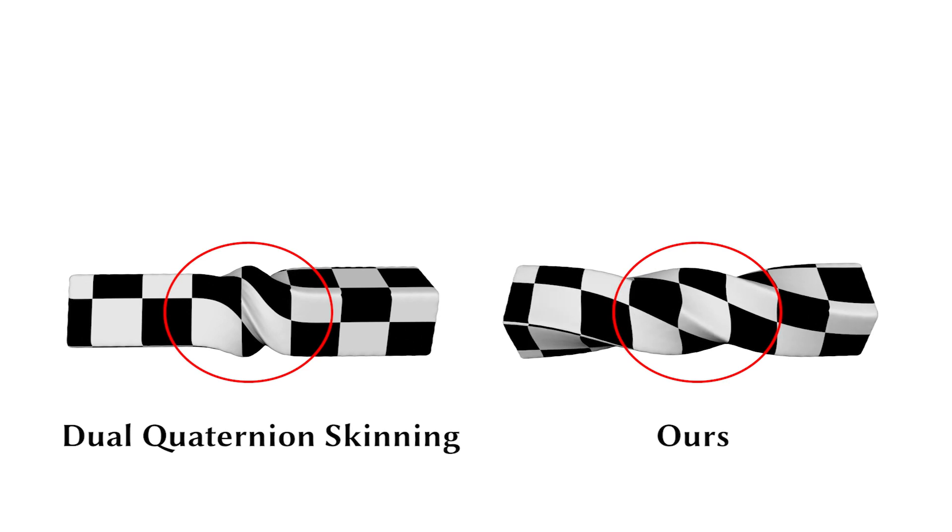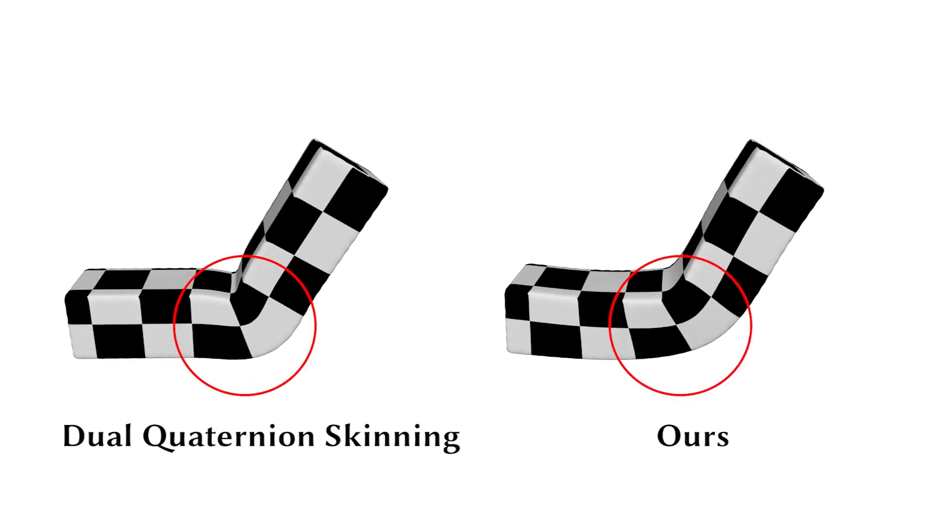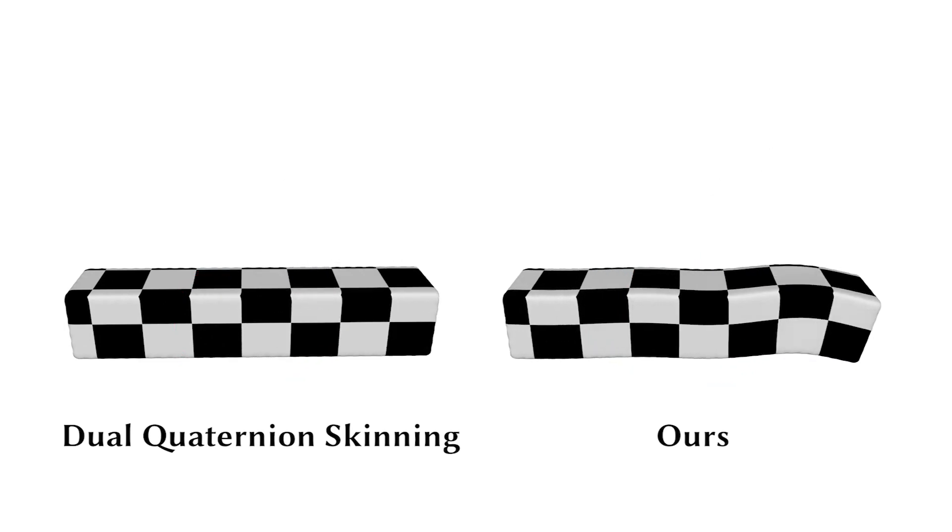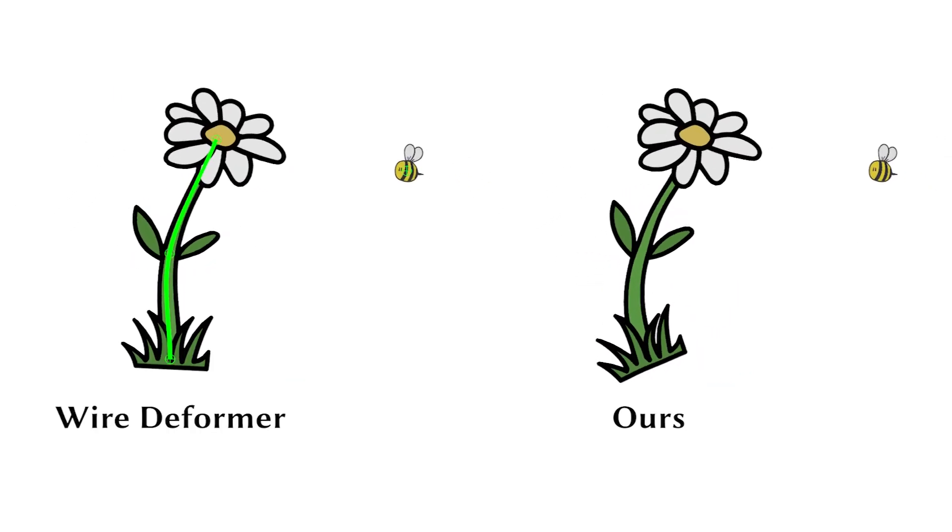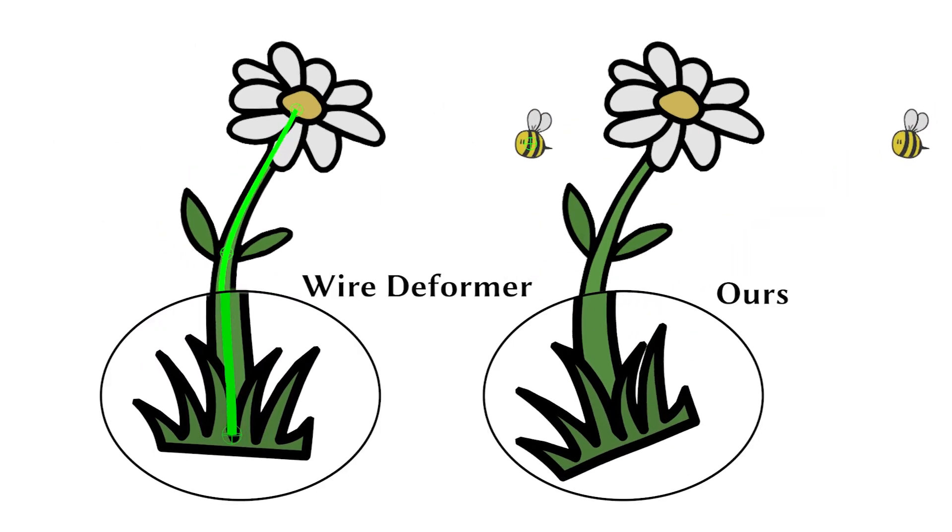Our method can also add secondary effects to non-linear rigs. Here we show a bar twisting and bending with dual quaternion skinning. Here we show another non-linear rig example of a daisy rigged with a wire deformer. Notice how it becomes more cheerful.